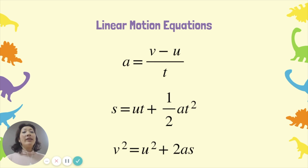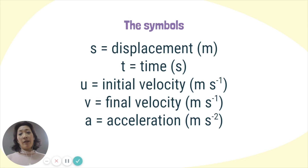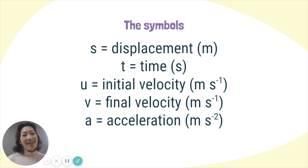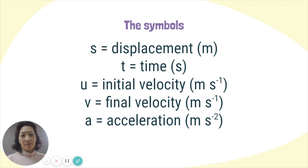Before we start deriving this formula, we must first know what each of these symbols mean. S is displacement with SI unit of meters. T is time, SI unit seconds. U and V are both velocities, but because there's going to be a change in velocities, U is the initial velocity measured in meters per second, and V, also in meters per second, represents the final velocity. A is the acceleration with its SI unit, meters per second squared.